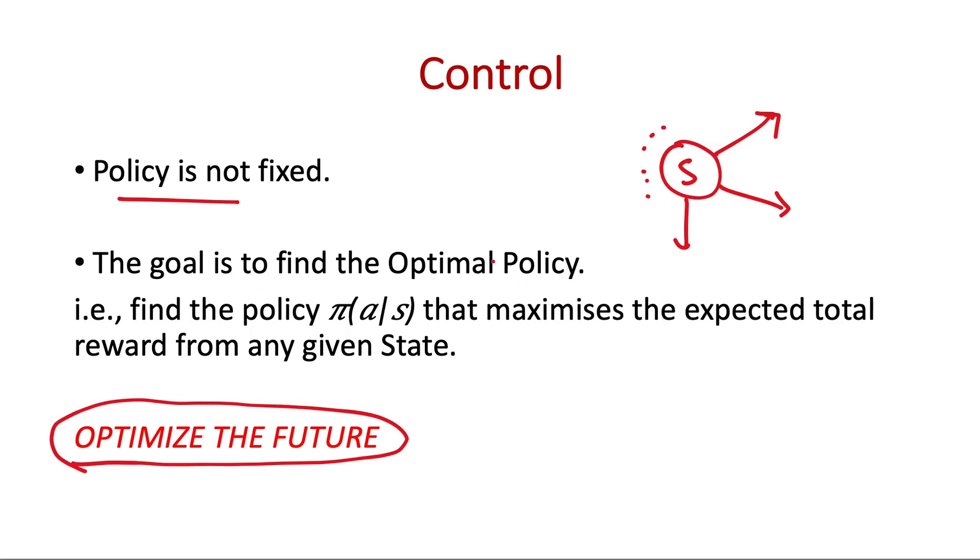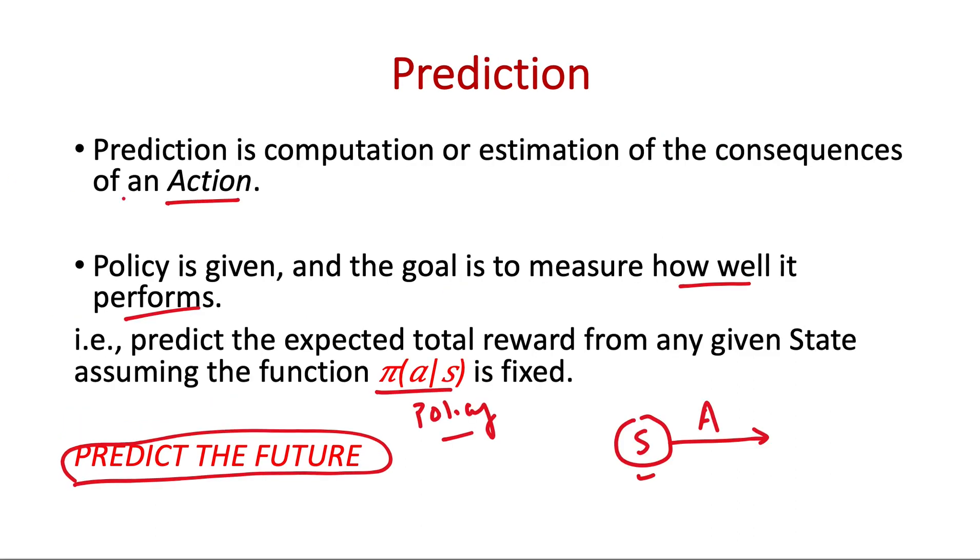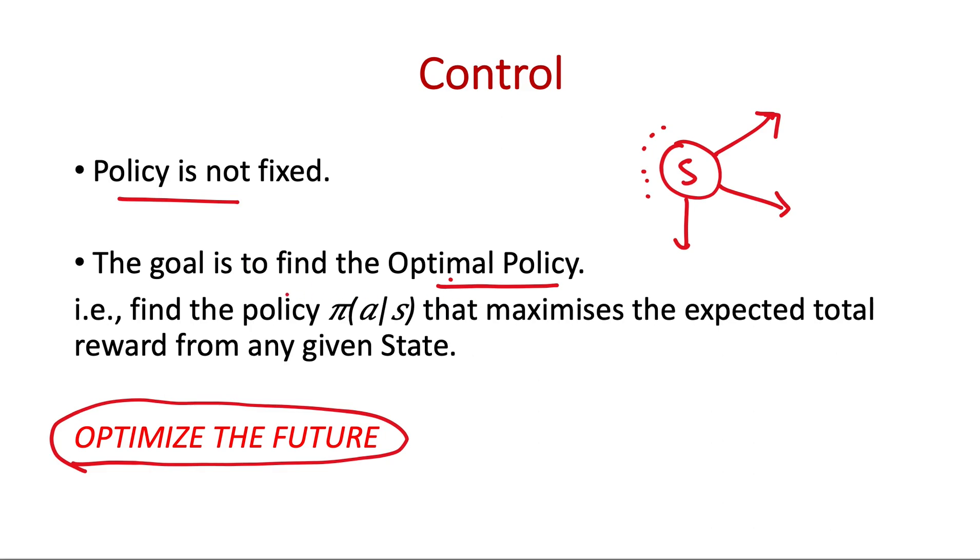The goal is to find the optimal policy, whereas in prediction the policy was given. Find the policy π(a|s) that maximizes the expected total reward from any given state.